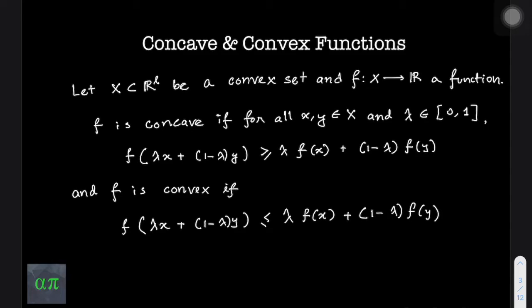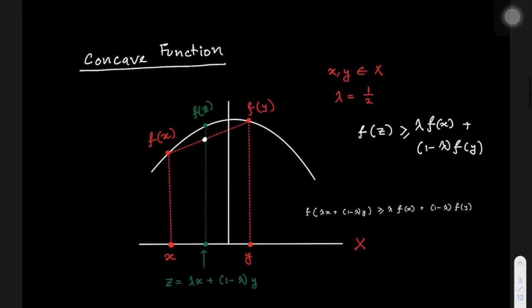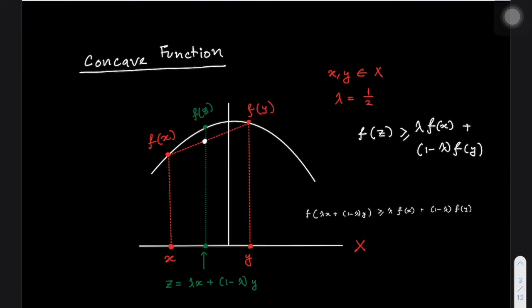Let's take a look at a graphical example to understand what this definition is actually telling us. This is an example of a concave function. The x-axis represents our domain x and the y-axis represents our range. We pick any x and y elements of x, and for the purpose of this illustration let's pick lambda equals to one half. With this lambda, this is the combination of lambda*x and (1 minus lambda)*y, and we call this point z. The equation we need to validate — if it is true, then this function is a concave function.